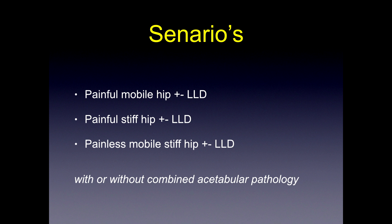There are probably three or four types of scenarios you might encounter: a mobile hip that's painful with or without a leg-length discrepancy, a stiff painful hip with or without a leg-length discrepancy, or a painless but stiff hip again with or without leg-length discrepancies. I'm talking predominantly about the proximal femur, but you need to correlate all this with the acetabulum as well — that's part of a talk still to come.